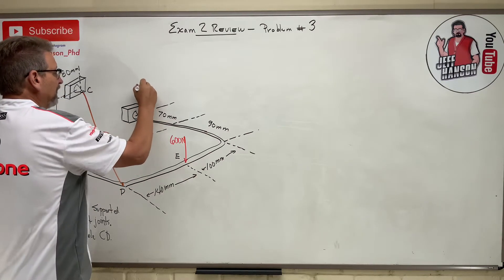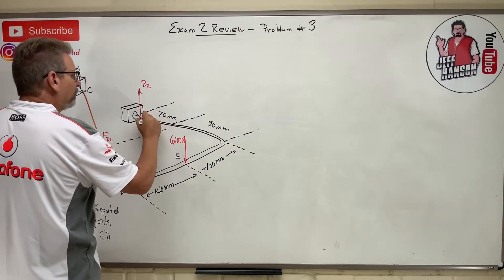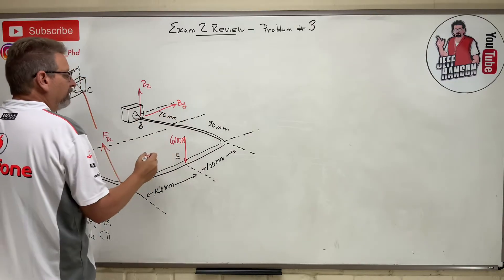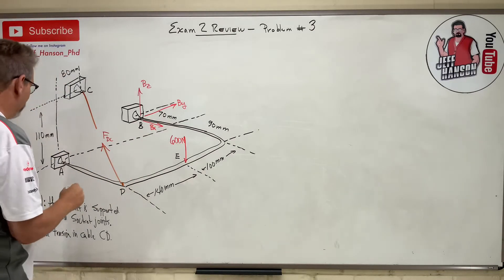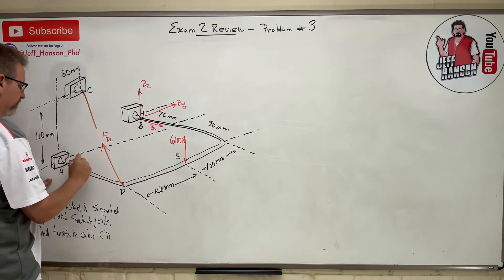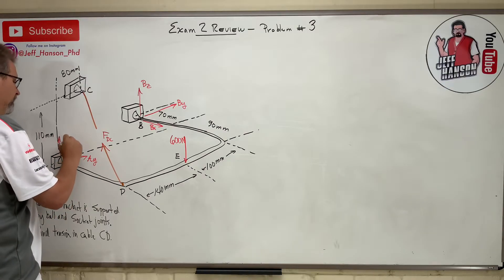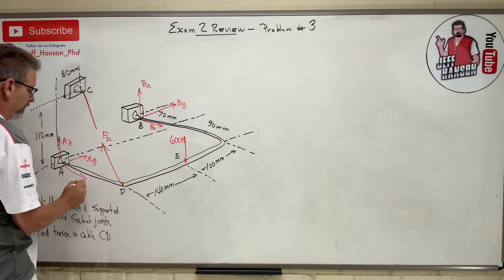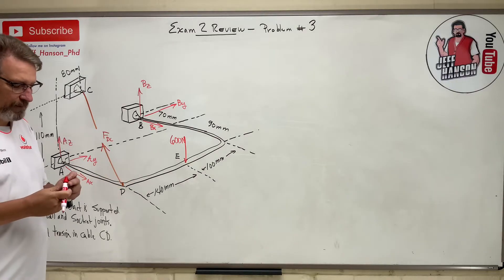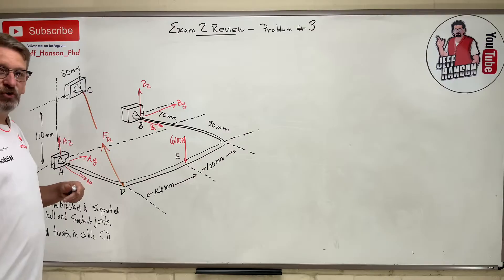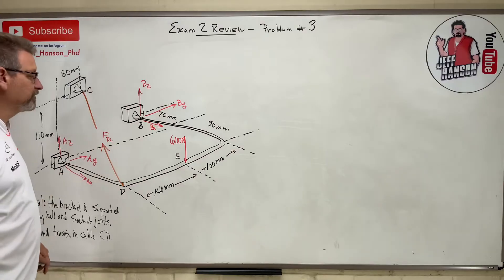So I'll label Bz, By, and Bx at point B, and similarly Ay, Az, and Ax at point A. I assumed positive because in a 3D problem it's really hard to figure out which way they go — I'll let the math do it for me. If I get a negative, I'll know I put them on in the wrong direction. No big deal.